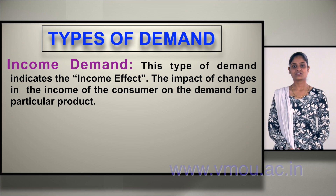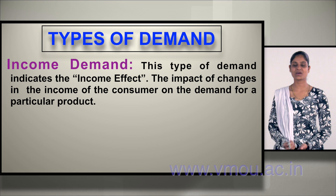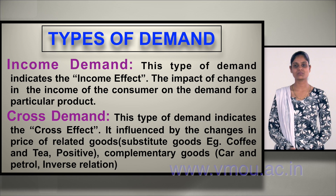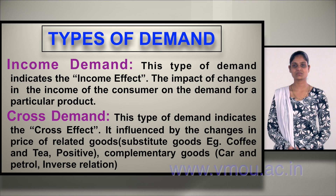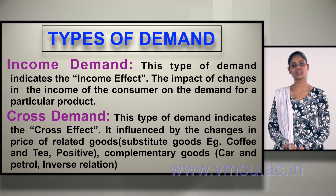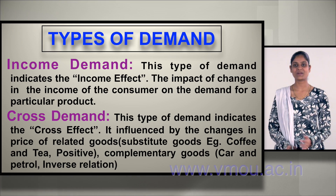Cross demand indicates the cross effect — changes in the price of related products. Cross demand is divided into two parts: substitute goods and complementary goods. Substitute goods can be used in place of each other — for example, coffee instead of tea, or tea instead of coffee. Complementary goods are used together — for example, car and petrol. Without petrol, a car is of no use.